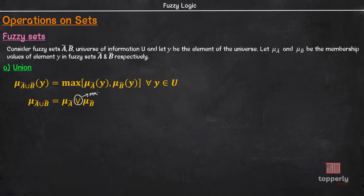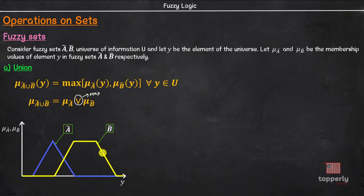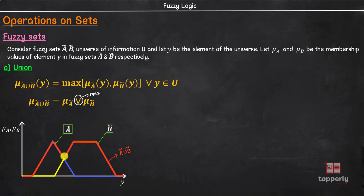Here, this operator is called the max operator, and what it does is it gives the maximum of the membership value of element Y in fuzzy set A and fuzzy set B. To understand this concept better, let us use membership graphs. The x-axis represents the elements Y and the y-axis represents membership values. The blue curve represents set A and the yellow curve represents set B. Then the membership curve for A union B is given by the maximum values of both these curves. Please note that we are taking the maximum value of membership of element Y among set A and set B — that is, we are only interested in the red curve and not the area under the curve.